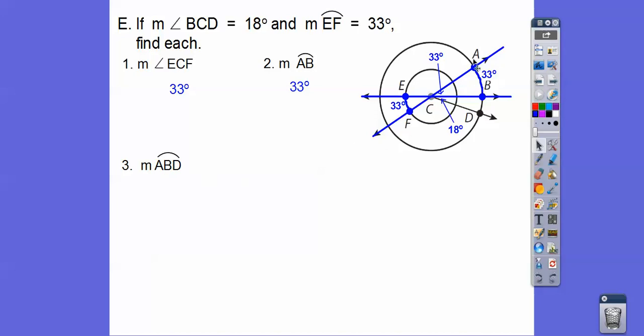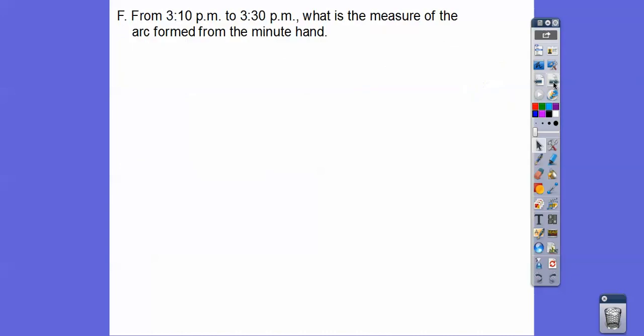ABD. Here's ABD. Well, if that's 18, this is 18 out here. So the arc addition postulate says we can add 33 plus 18, and that's going to give us 51 degrees.